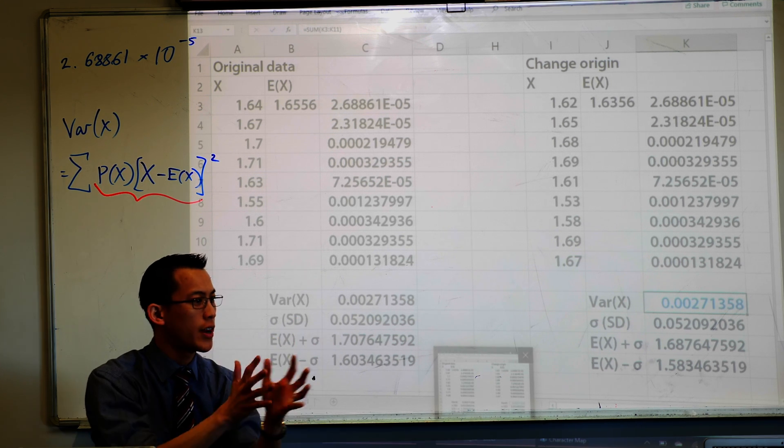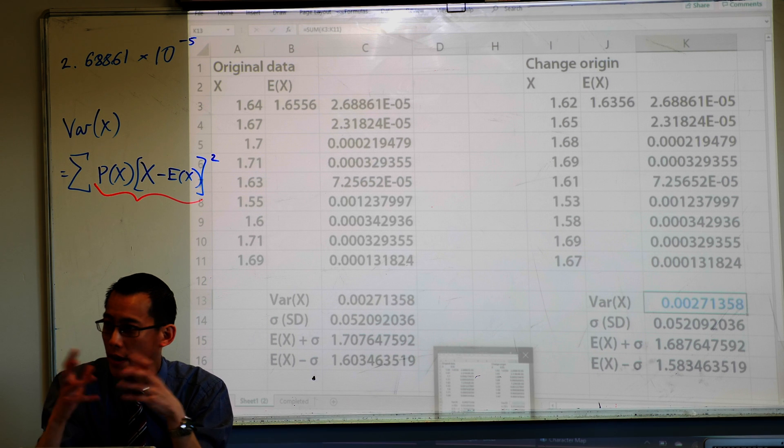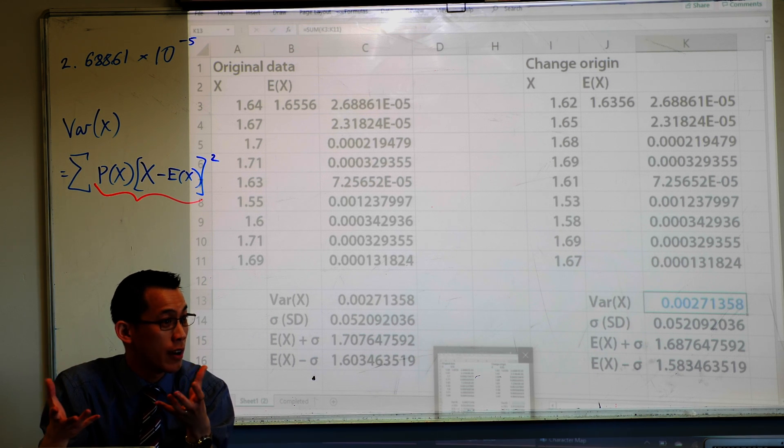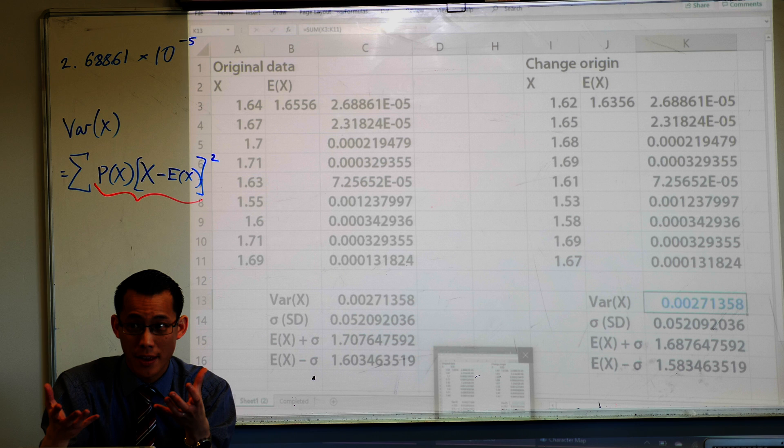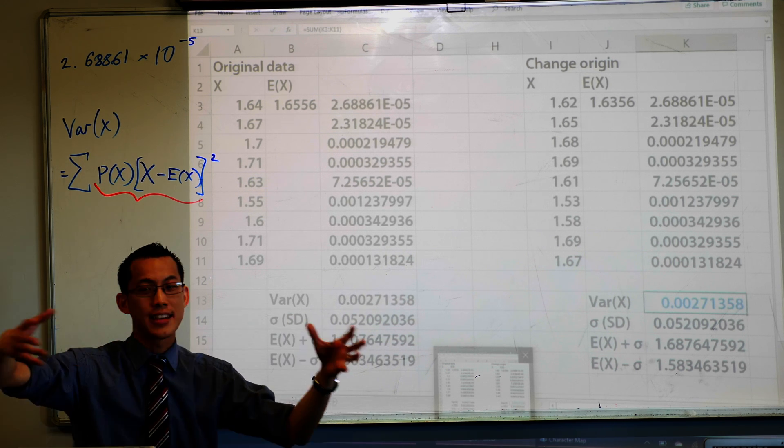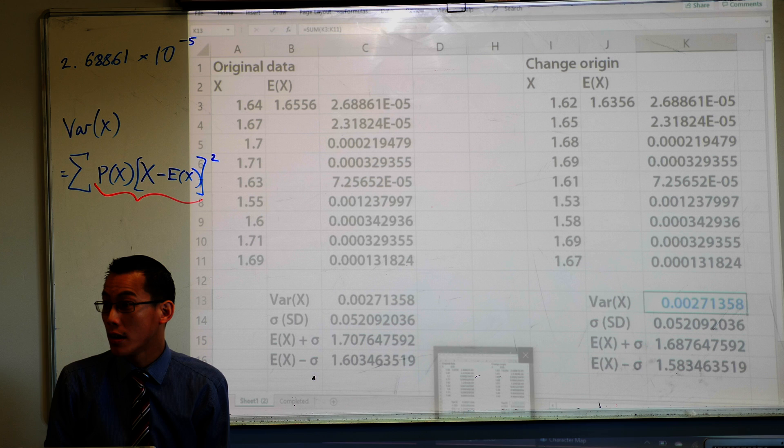Think about that for a second. What does variance measure? What is variance about? Like the word itself tells you. Variance is about how much variety is there? How much is this data spread out? It's a measure of spread, yeah?